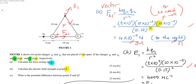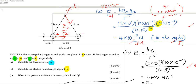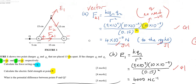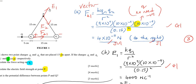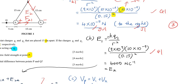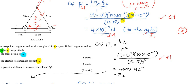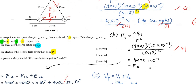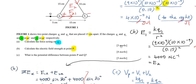So we have E1 and E2 at point P. The formula for electric field strength is E = kq over r squared. For q1, the distance is 15 cm — convert to meters, remember to square it — giving a value of 4000 N/C. E2 equals E1 because q2 has the same charge magnitude and is also 15 cm away, so same value.